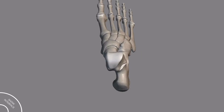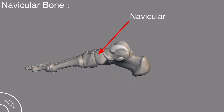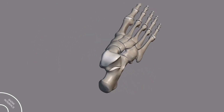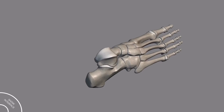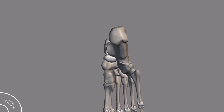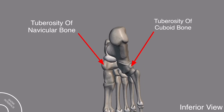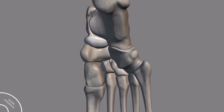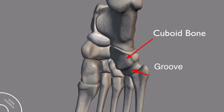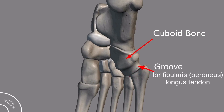In the ankle, this is the navicular bone, and this is the tuberosity of the navicular bone. This is the cuboid bone, and this is the tuberosity of the cuboid bone. If you look from the inferior view, these two tuberosities are opposite to each other. Also notice, in the cuboid bone there is a groove, and this groove is for the fibularis or peroneus longus tendon.